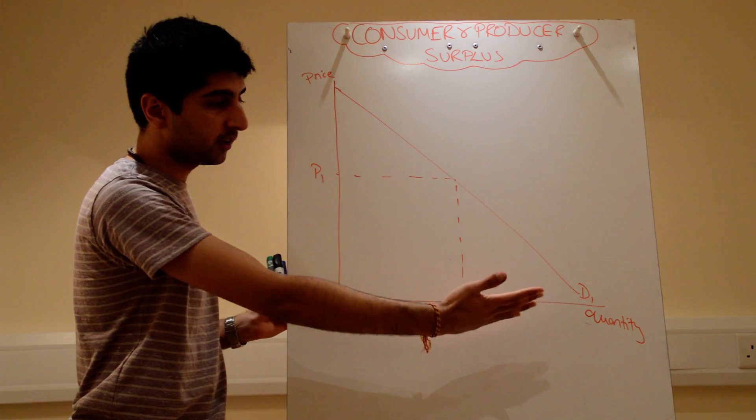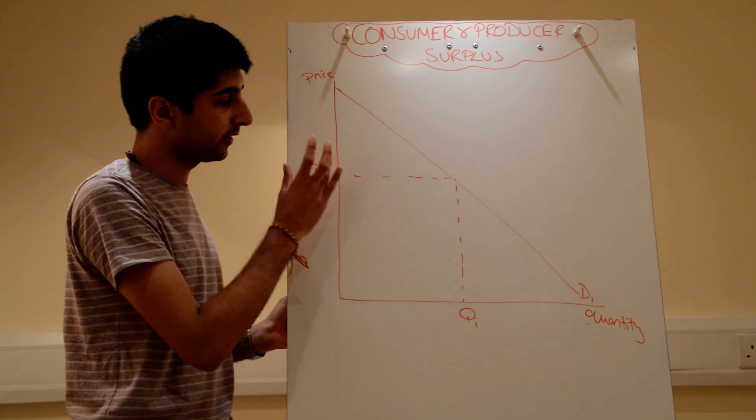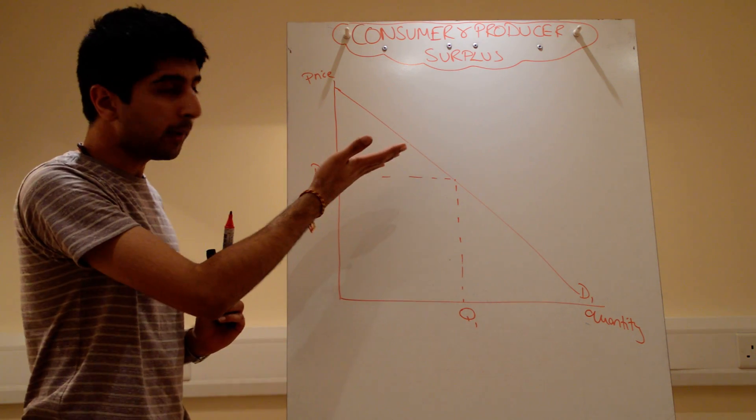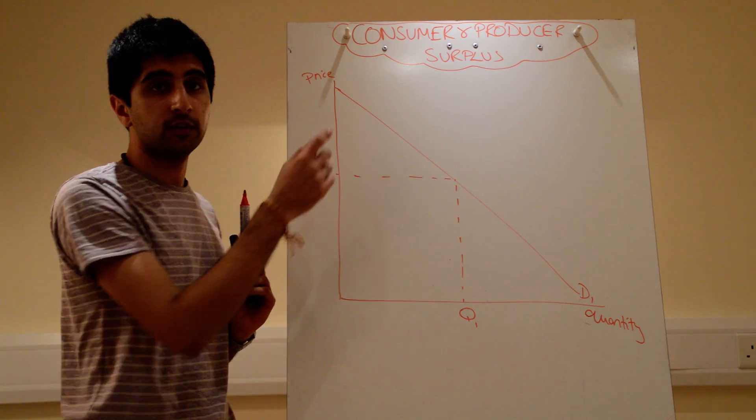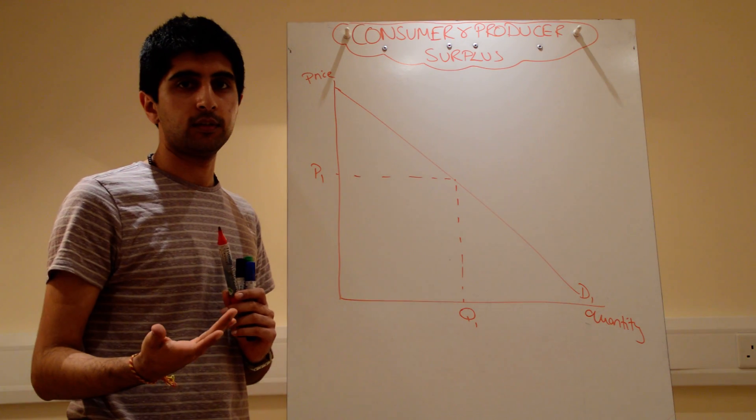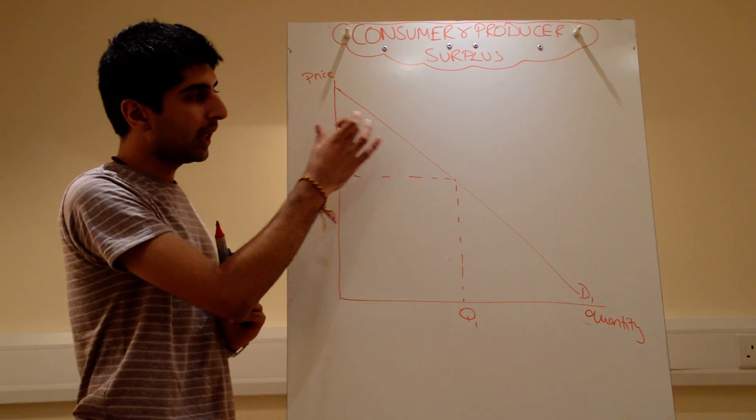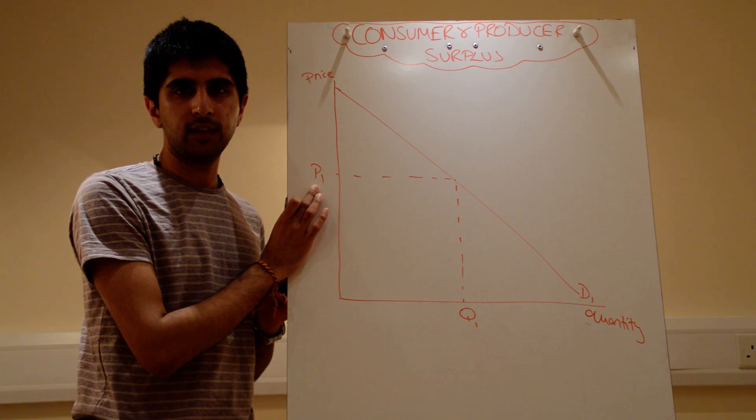Let's say we've got a basic demand curve, a downward-sloping demand curve. Let's say that the price for a good or service is at P1. Well, look at our demand curve. The demand curve goes way beyond P1, which tells us that there are many consumers that are willing and able to pay a higher price for that good or service. Well, they're willing and able to pay a higher price, yet the price is lower than what they're willing and able to pay. The price is at P1.